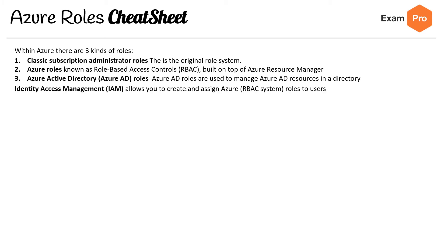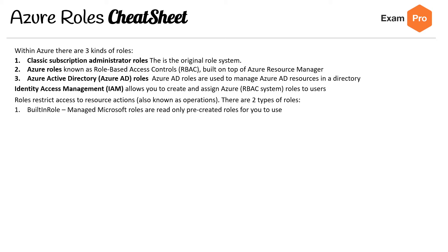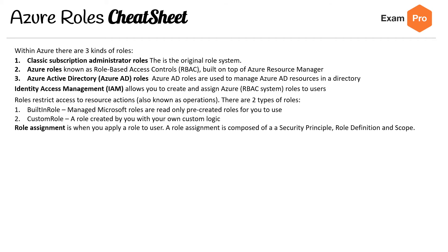You need to know the difference between the three when we're talking about identity access management. IAM allows you to create and assign Azure roles to users. Roles restrict access to resource actions, also known as operations. There's two types of roles: you've got built-in roles, and Microsoft-managed roles are read-only pre-created roles for you to use. And then you have custom roles — a role created by you with your own custom logic. A role assignment is when you apply a role to a user, and a role assignment is composed of a security principle, role definition, and scope.